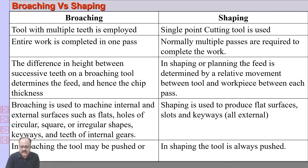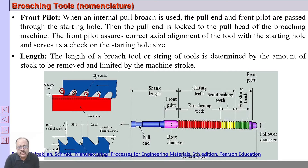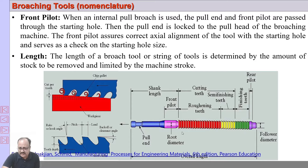Now we will discuss the geometry of a broach tool. The overall length of the tool is designed to remove a specific volume of material from the workpiece. Each tooth removes a certain specific volume, and the summation of all volumes removed by each tooth equals the total volume of material designed to be removed. This is a custom-made tool, designed to remove a specific volume of material.